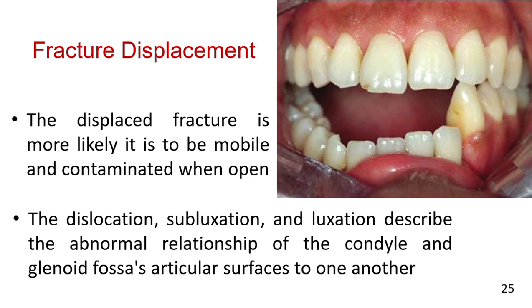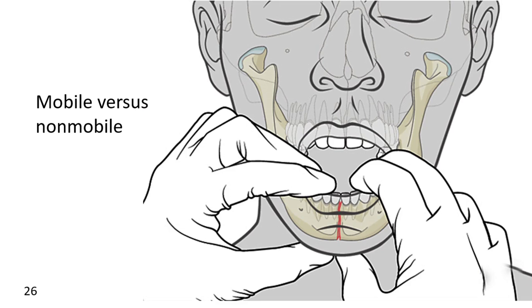Mobile versus non-mobile: mobility can result when there is displacement, requiring the clinician to use both hands, one on either side of the fracture, to feel for mobility. Mobile fractures are more painful for the patient because any mandible movement such as speaking, eating, or swallowing creates discomfort.